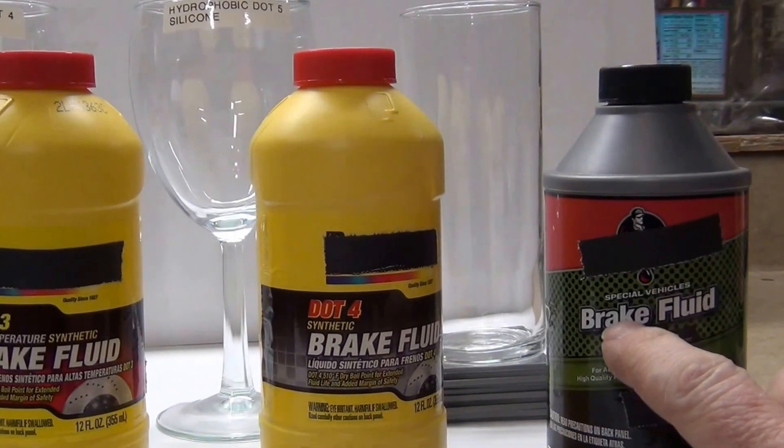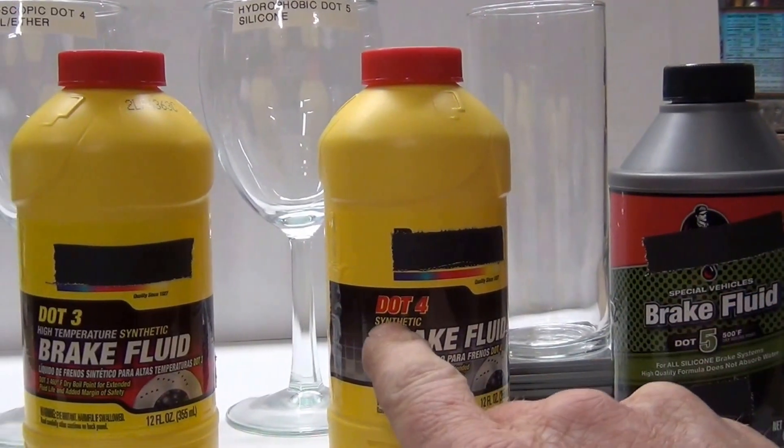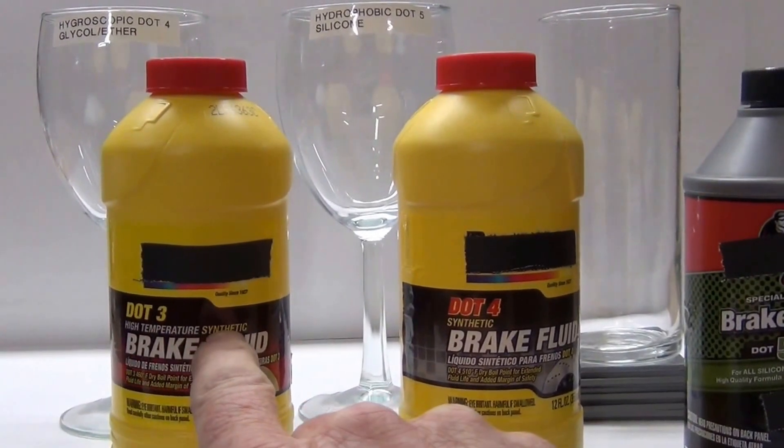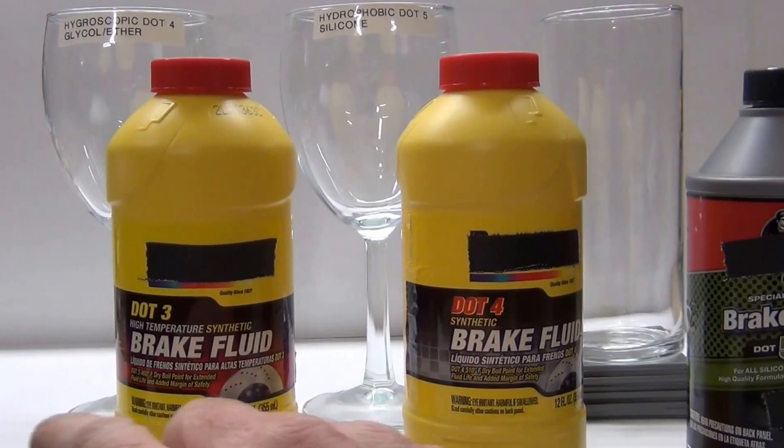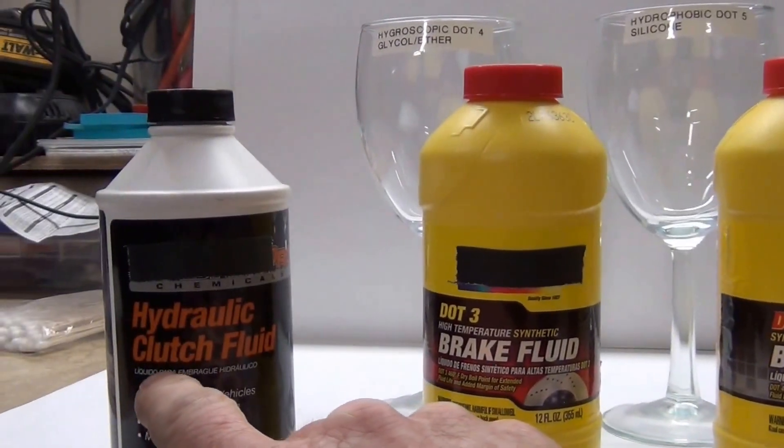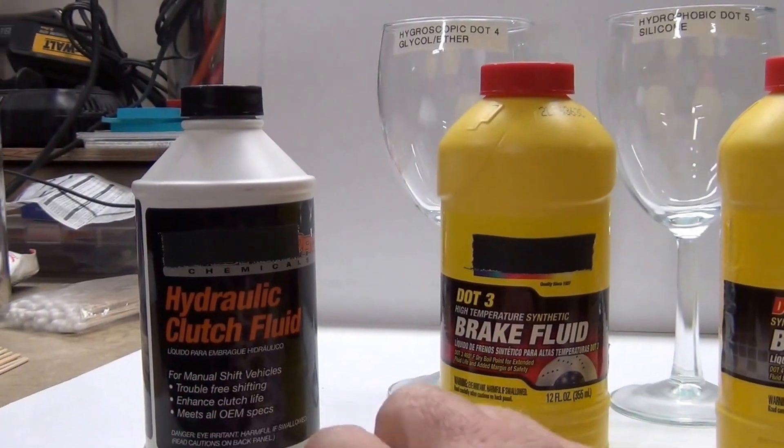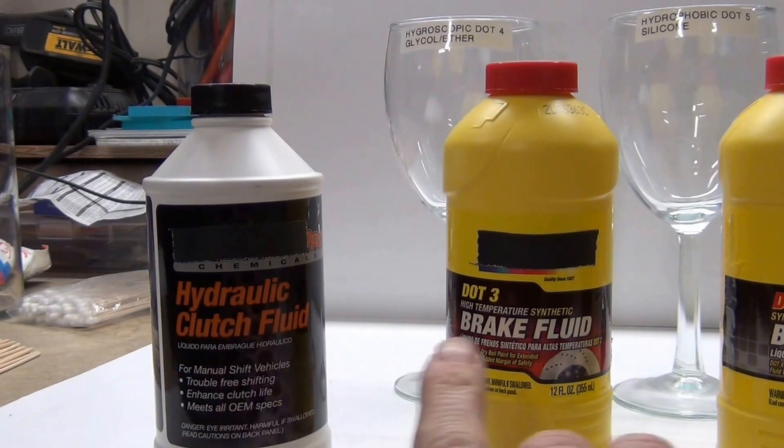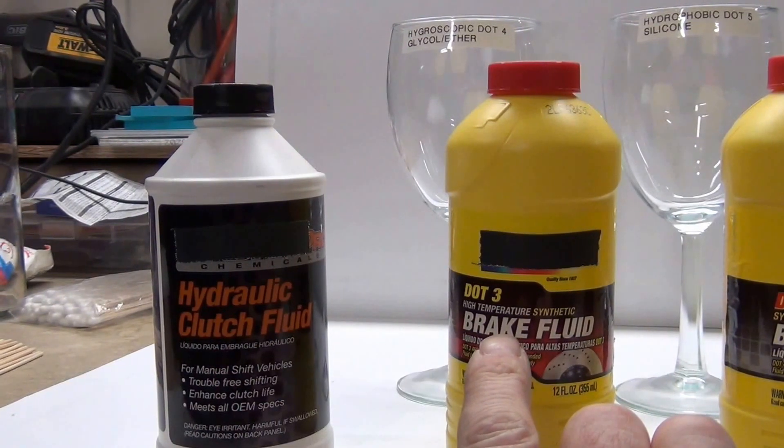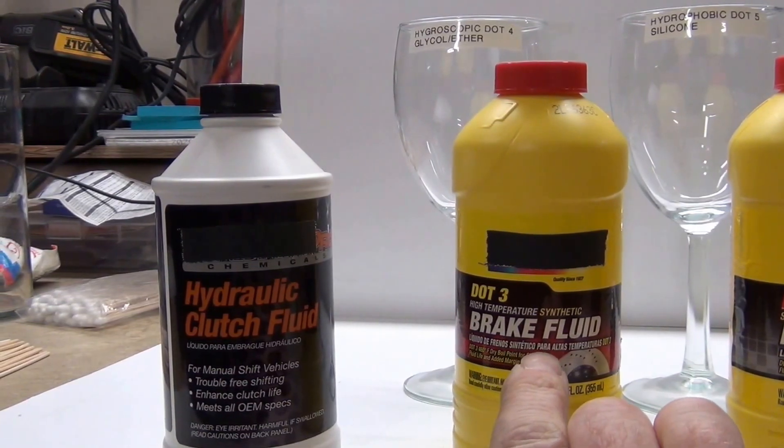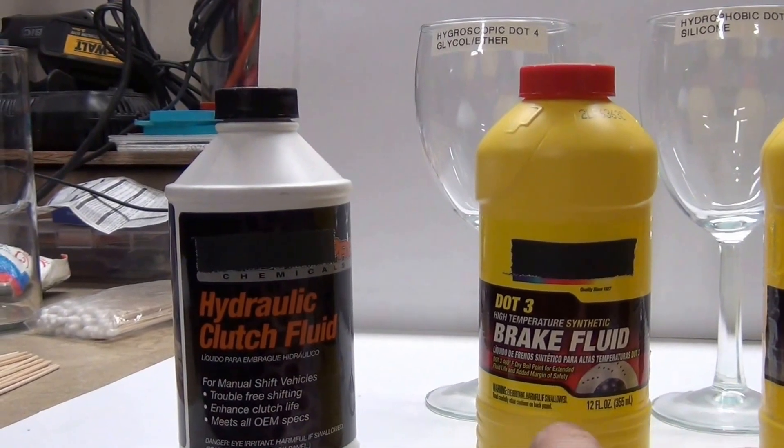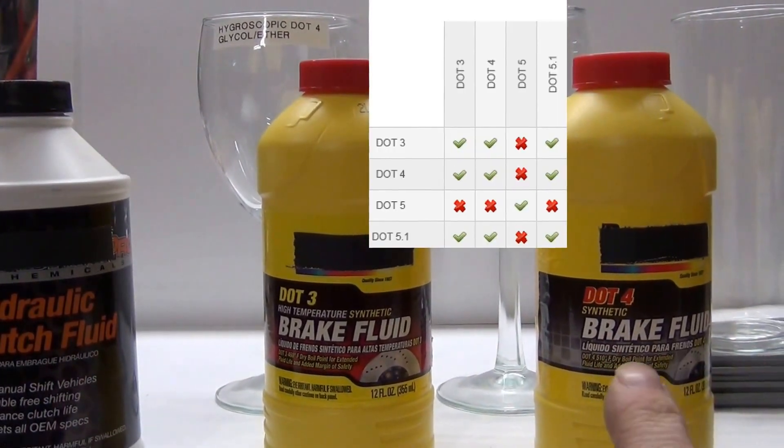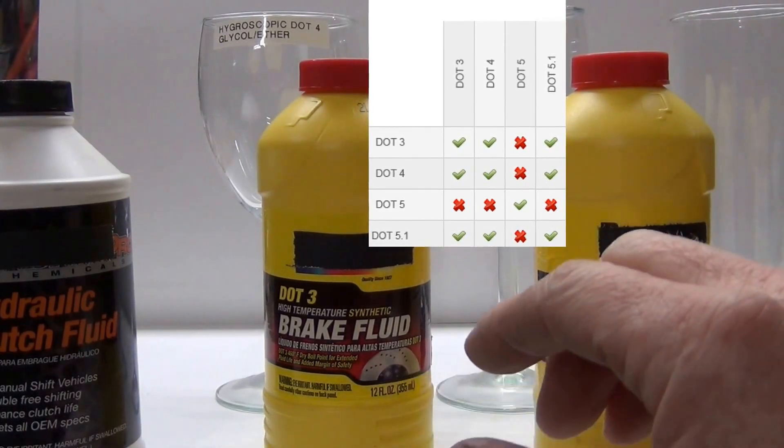We've got DOT 5 for special vehicles, DOT 4 synthetic, and DOT 3 high temperature synthetic. There's all these different labeling gimmicks, but you're dealing with pretty much the same type of things. This is hydraulic clutch fluid, which is essentially the same thing as the DOT 3. Both of these are hygroscopic, which means they absorb water. All three of these, including DOT 5.1, are all kind of the same thing.